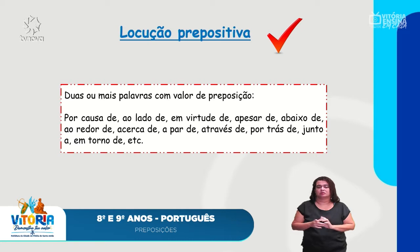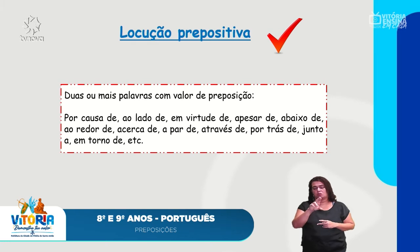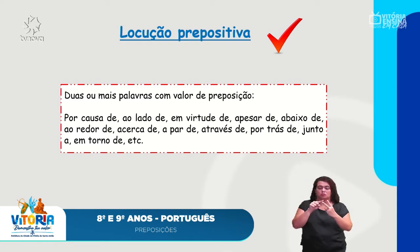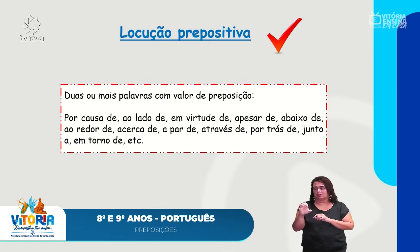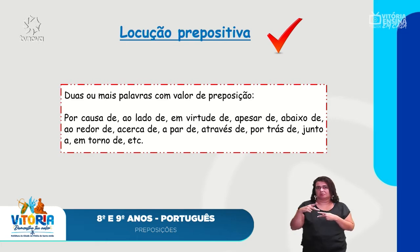Temos também a locução prepositiva. A gente já viu vários tipos de locução: locução adjetiva, locução verbal. Sempre quando há a presença de duas ou mais palavras, temos uma locução. No caso, locução prepositiva: quando tiver duas ou mais palavras com esse valor de preposição. Por exemplo: 'por causa de', 'ao lado de', 'em virtude de', 'apesar de' — são locuções prepositivas.